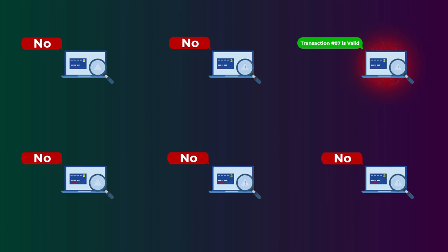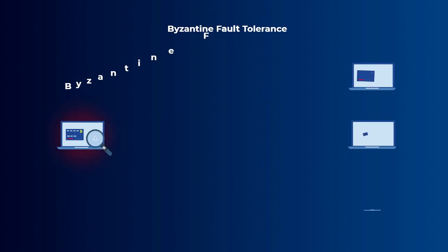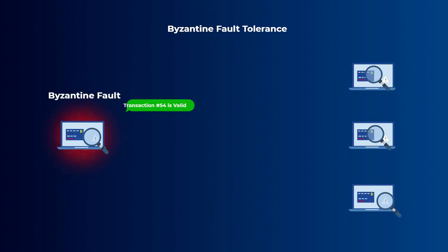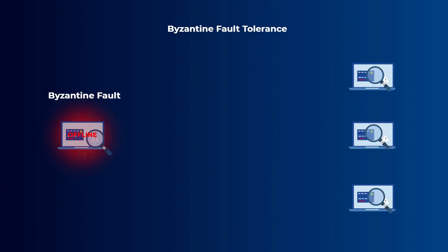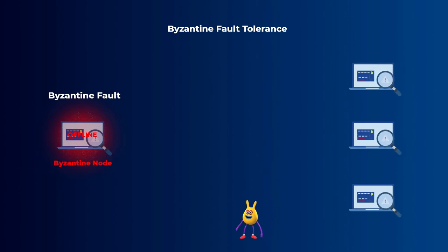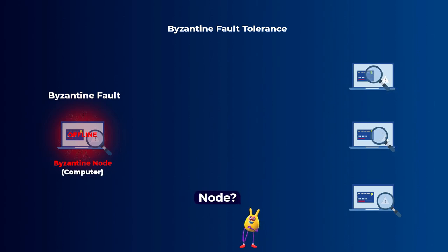So returning to the name Byzantine fault tolerance — a Byzantine fault is when a computer is malicious and spreading wrong information to other computers, or even when a computer is offline and not sending any information at all. This malicious or offline computer is called a Byzantine node. Don't be confused with the word 'node' — node simply means a computer.